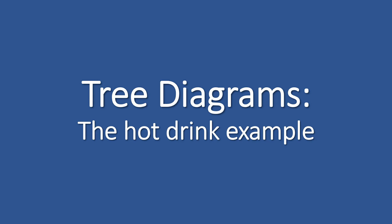As helpful as two-way tables are, they have their limitations, because you can only have two permutations of things — throwing two dice, tossing two coins, or two separate events. But what if we've got more than two events? Then we have to look at a different tool.